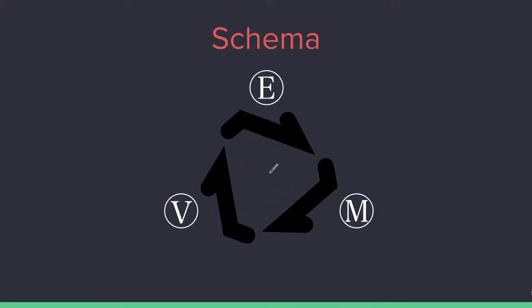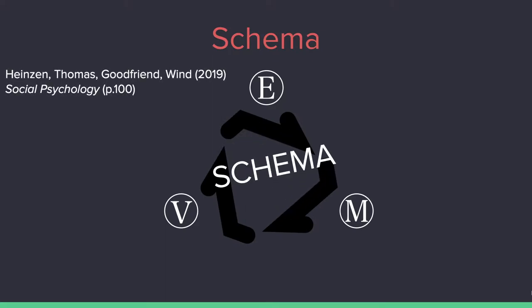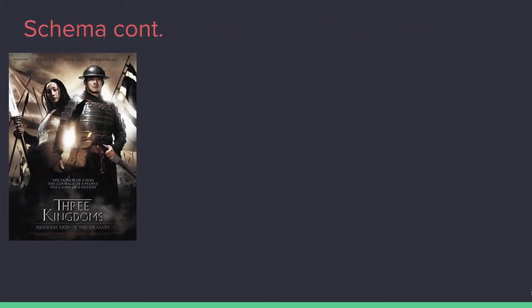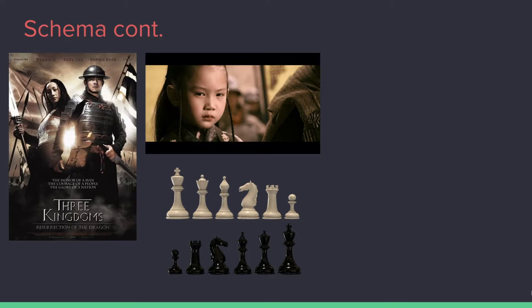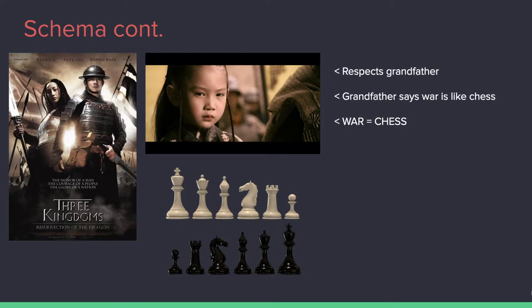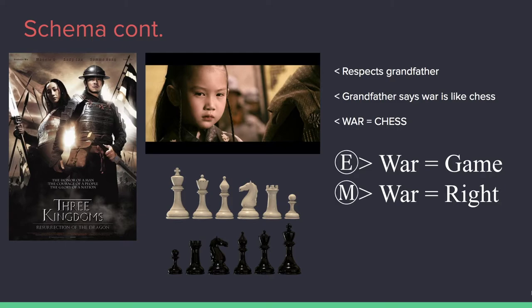So, schema. Ethics, morals, and values come together to develop an individual's schema. According to Thomas Heinzen and Wind Goodfriend's social psychology textbook on page 100, a schema is a cognitive memory structure for organizing the world. In the film Three Kingdoms: Resurrection of the Dragon, directed by Daniel Lee, one scene in particular shows the commander Cao Cao speaking to his granddaughter Cao Ying as they watch a battle wage in front of them. He tells her how these battles are simply just like games of chess, thereby distilling the schema in her mind that war is just like a chess game. Cao Ying listens to and respects what her grandfather tells her because she looks up to him, and through this she develops the ethical understanding that engaging in war can be looked at like a game. Her moral judgment is then shaped to see war as the right way to go about things, and thus she values war and combat. When the only truth is war and the thrill of victory is the drive, a schema like this one can develop.